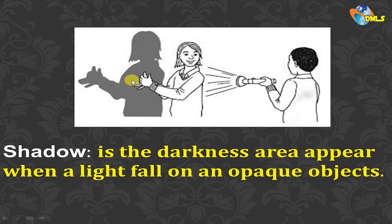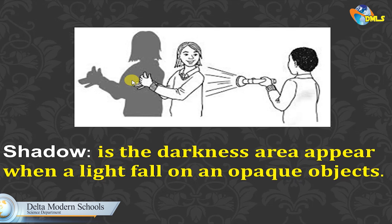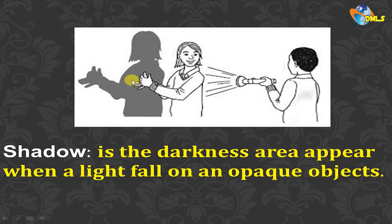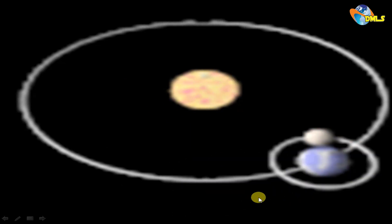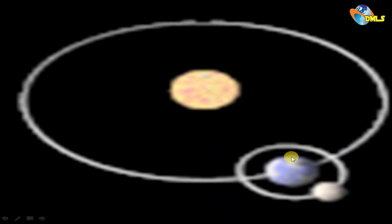I ask you now: only objects like your hand, your phone, a tree, or paper can form a shadow — or can celestial bodies also form a shadow? Think and answer. The answer is yes, celestial bodies can form a shadow. But how? You can observe it here: the sun, the Earth rotates around the sun, and the moon rotates around the Earth.